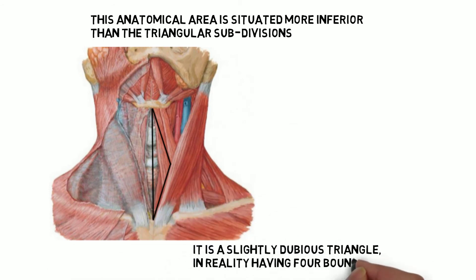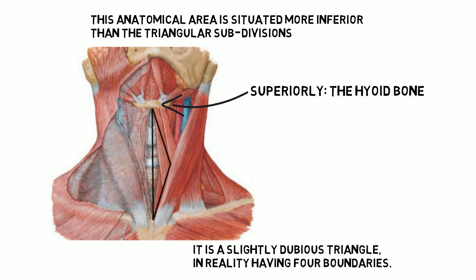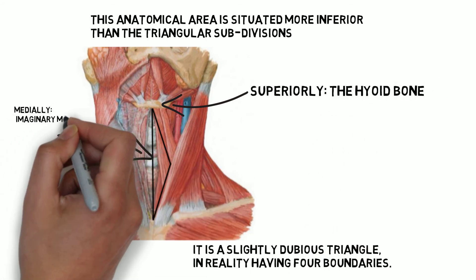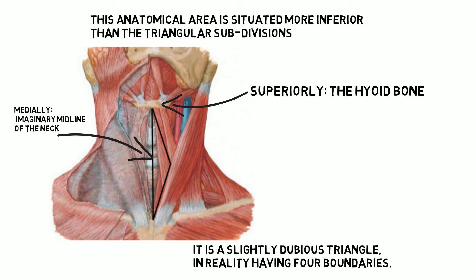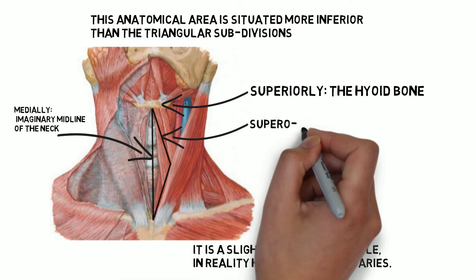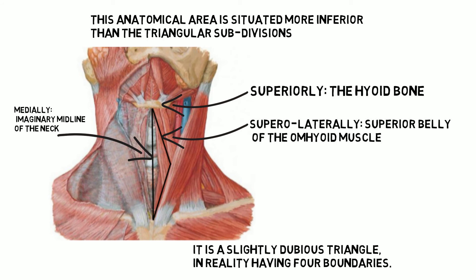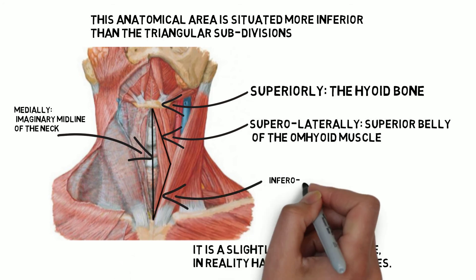It is slightly quadrilateral in reality, having four boundaries. The boundaries of the muscular triangle are: superiorly it has the Hyoid bone, medially it has the imaginary midline of the neck, superolaterally it has the superior belly of the omohyoid muscle, and inferolaterally the inferior portion of the sternocleidomastoid muscle.